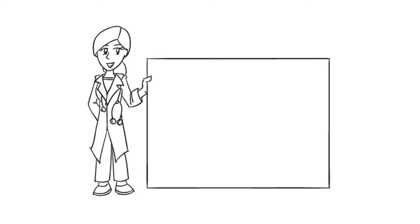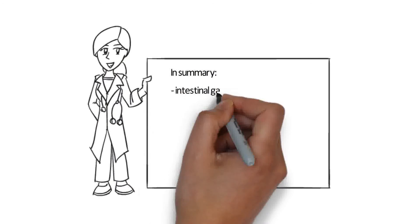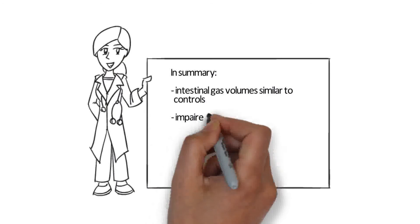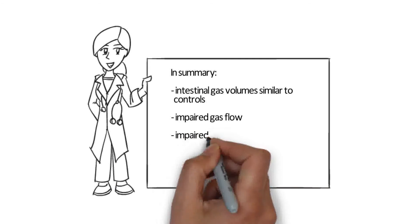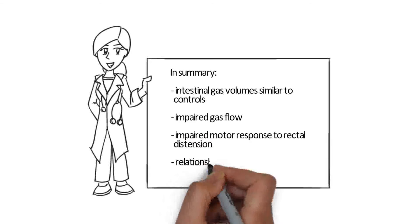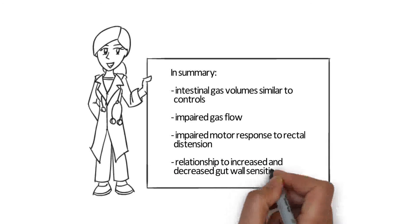In summary, IBS patients complaining of bloating and or distension have intestinal gas volumes that are similar to healthy controls. However, there is evidence of impaired gas flow, an impaired motor response to rectal distension, and a relationship of bloating and distension to increased and decreased gut wall sensitivity, respectively.